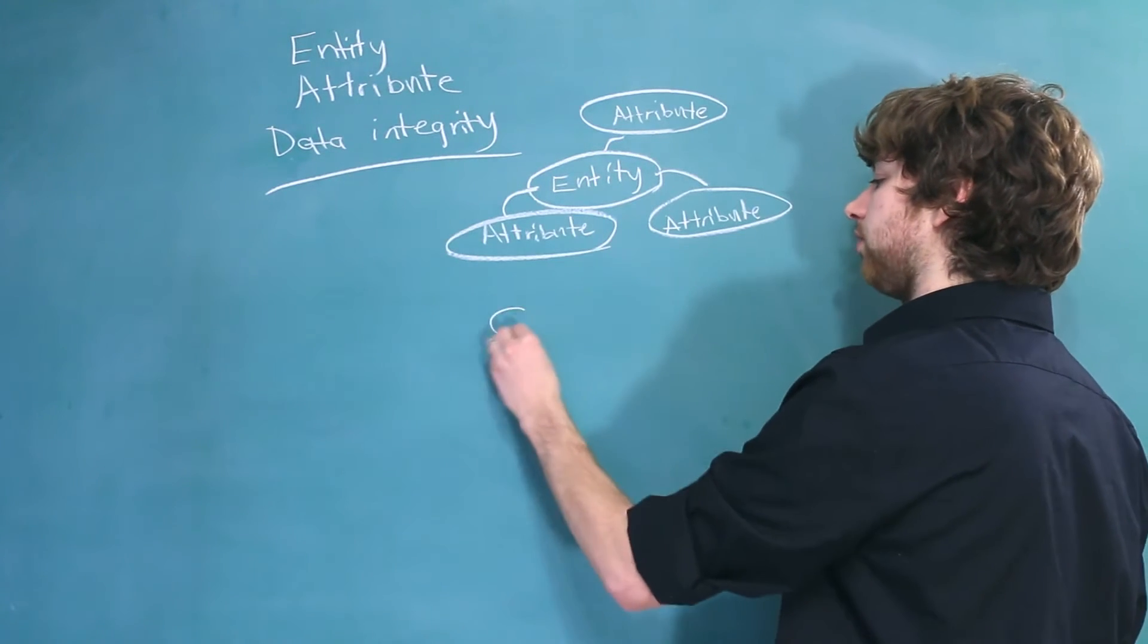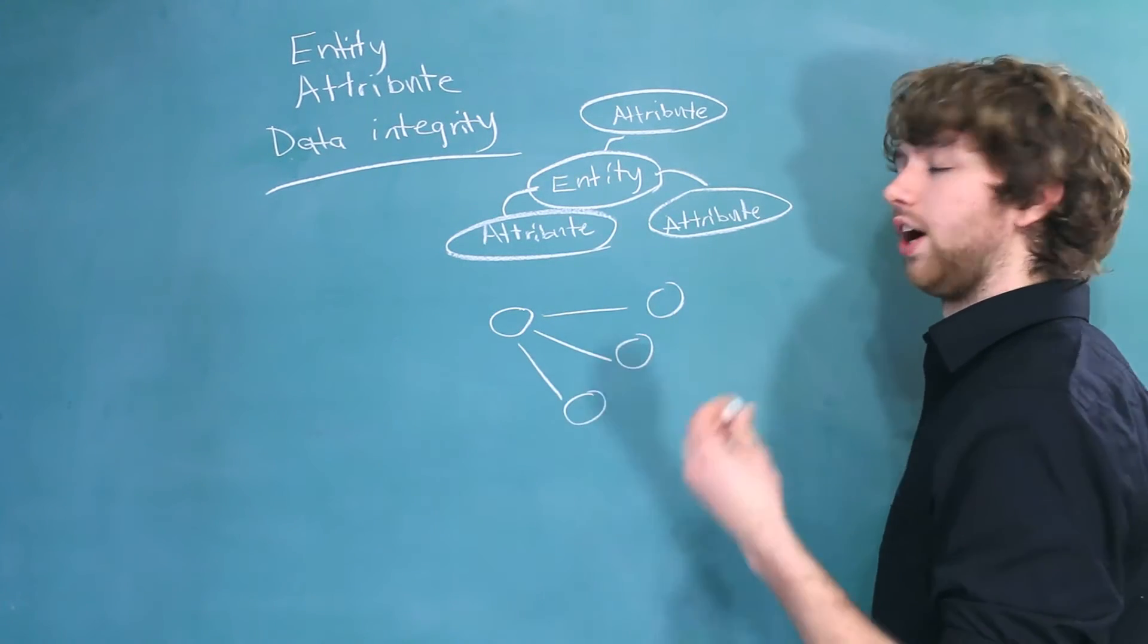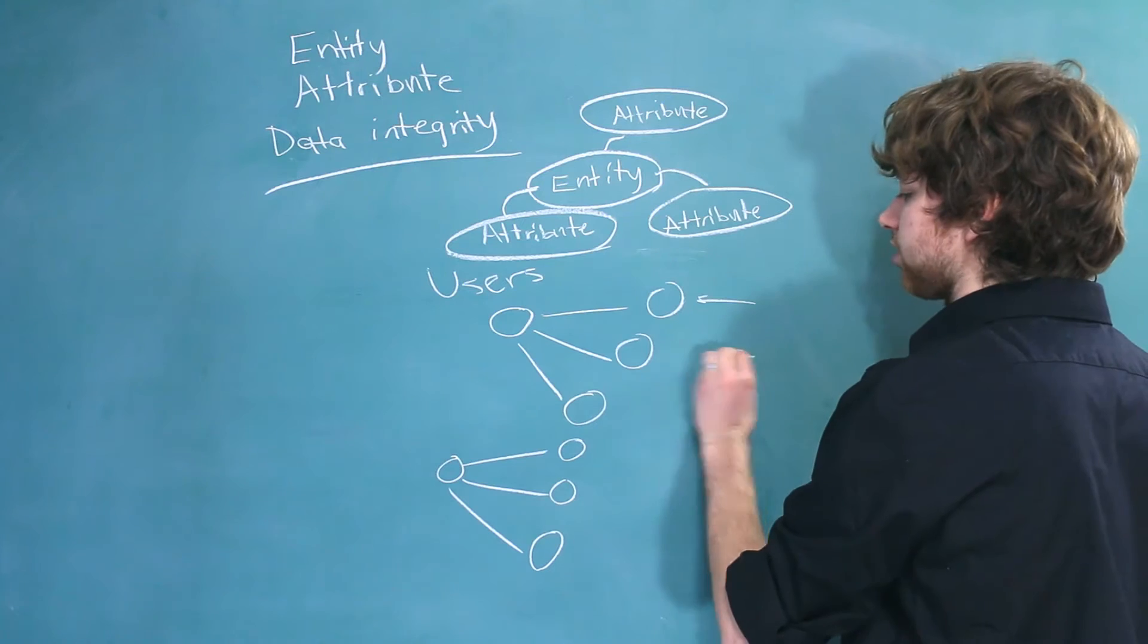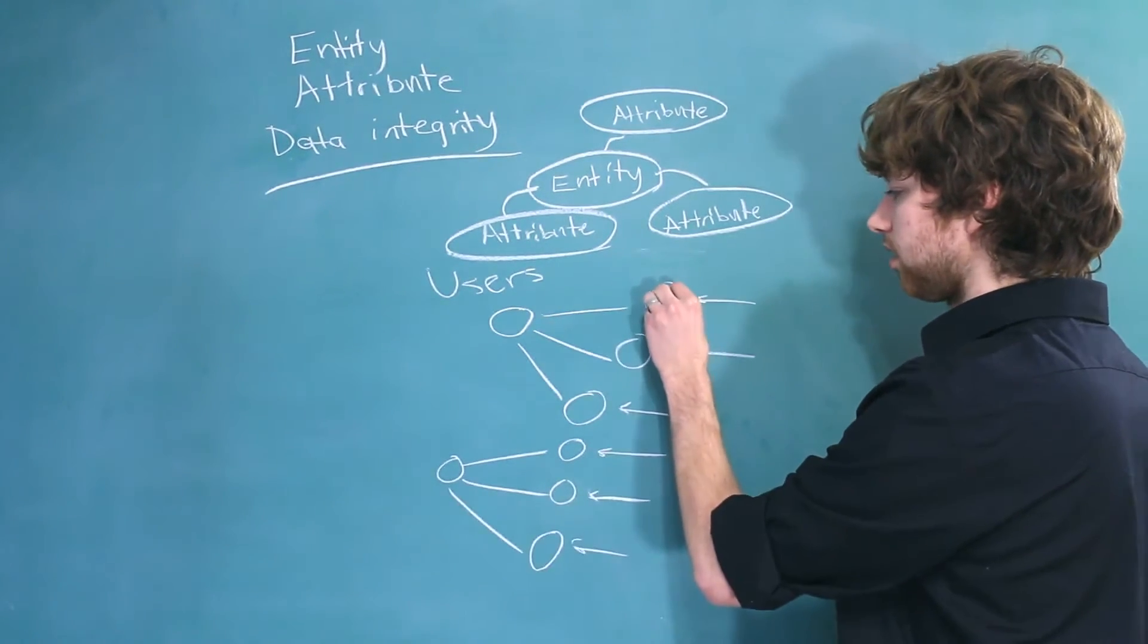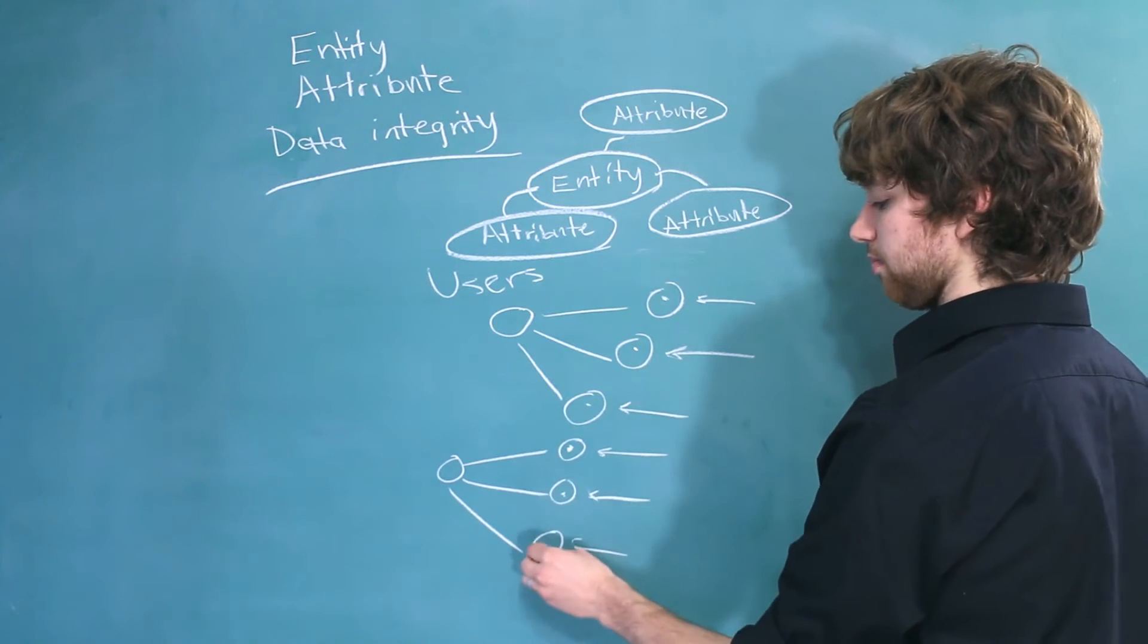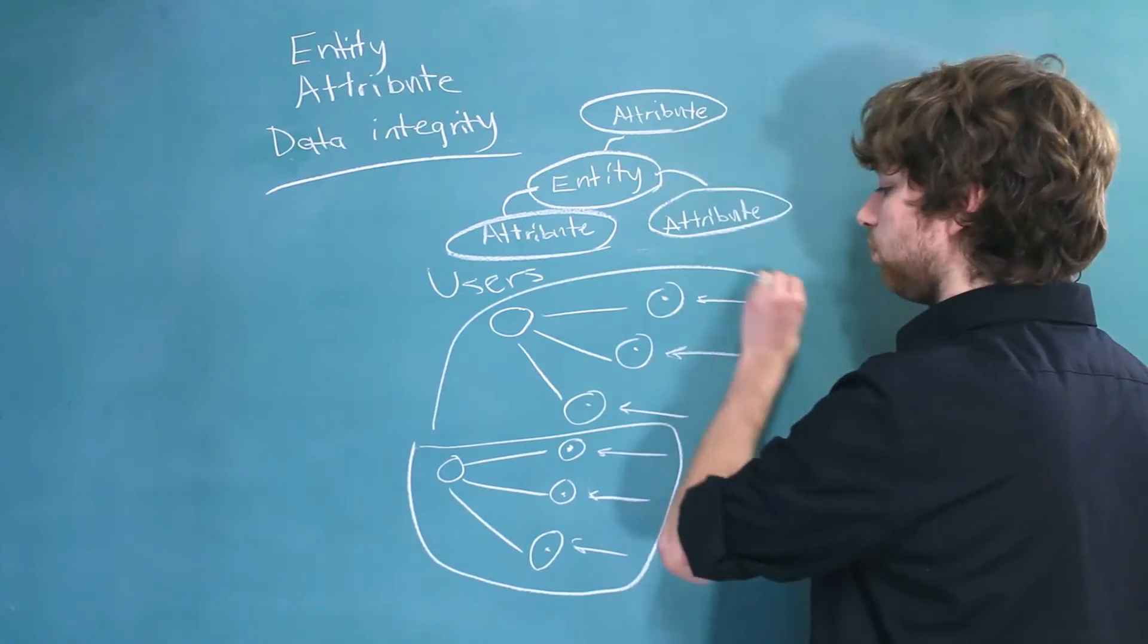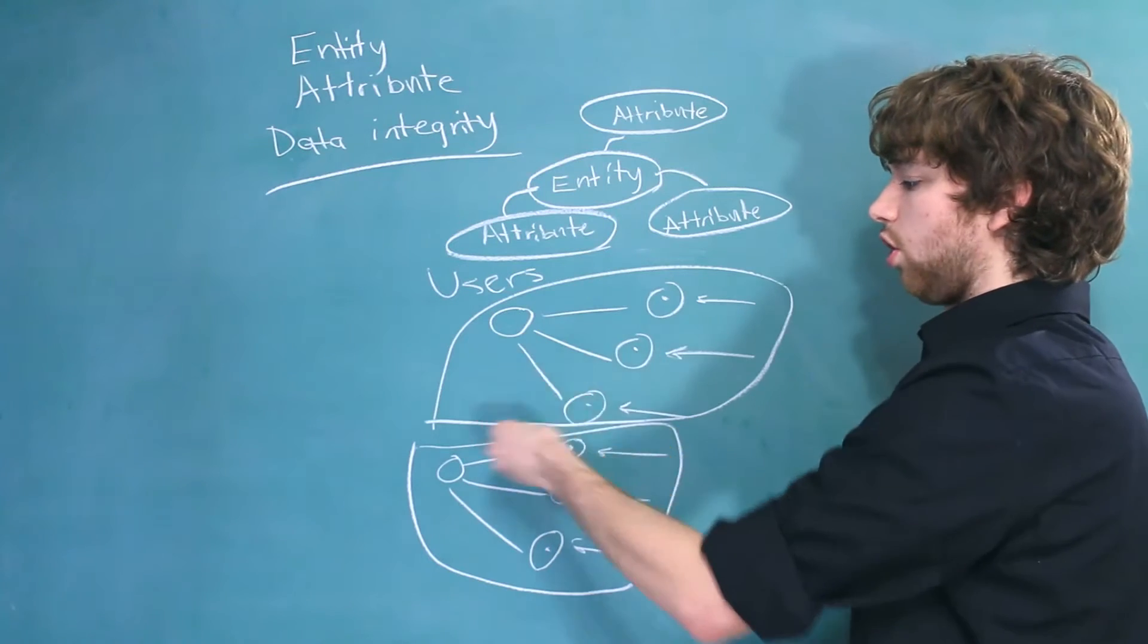So, if we have an entity, and we have a couple attributes that describe this entity, let's say we have another entity, so two instances of an entity. Let's just say these are users, and each one of these is an attribute that describes the user. What if, by chance, this matched this, this matched this, and this matched this? It would almost be as if we had duplicate data. That's because both of these would look like the same thing, because all of the attributes about it are the same.